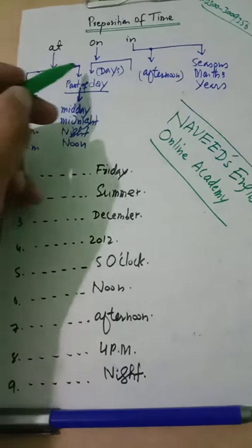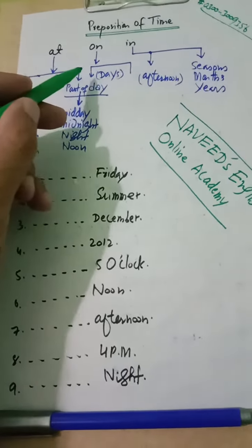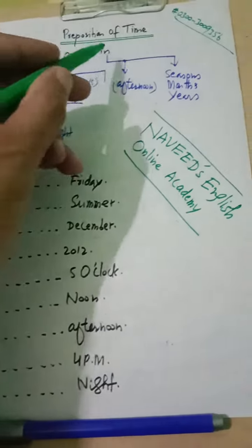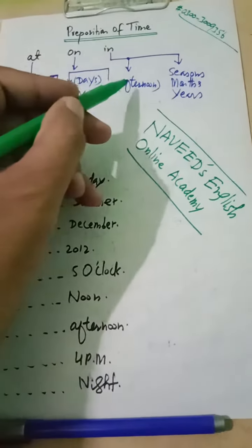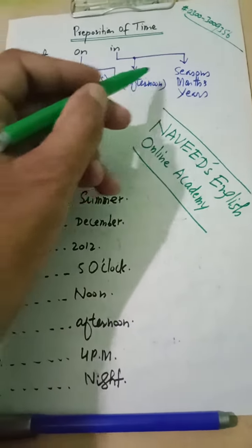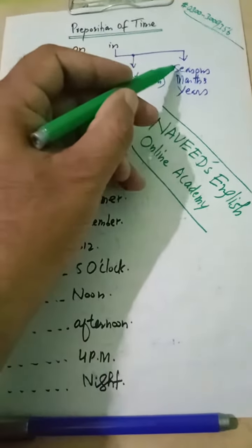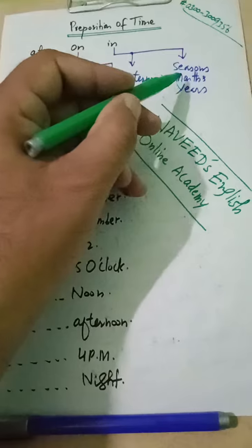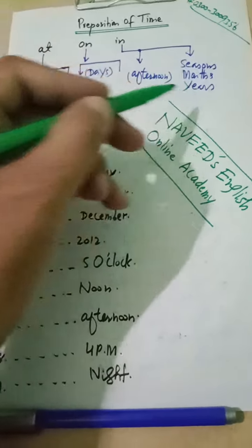और On जो है, वो सिर्फ days के साथ इस्तेमाल होता है। और In जो है, वो afternoon के साथ इस्तेमाल होती है preposition। और seasons के साथ, months के साथ, और years के साथ।